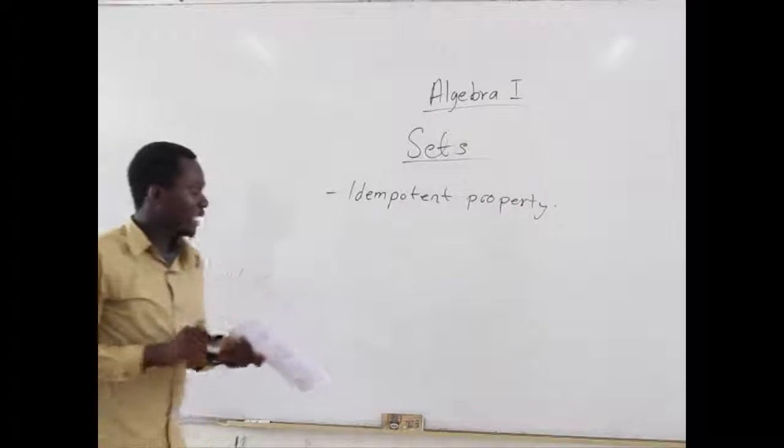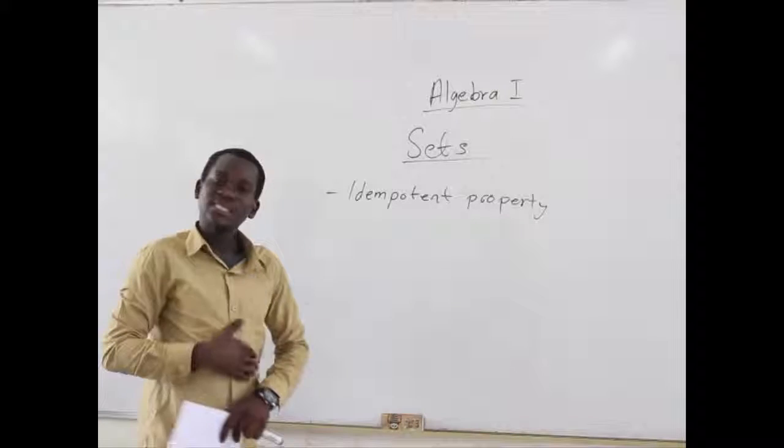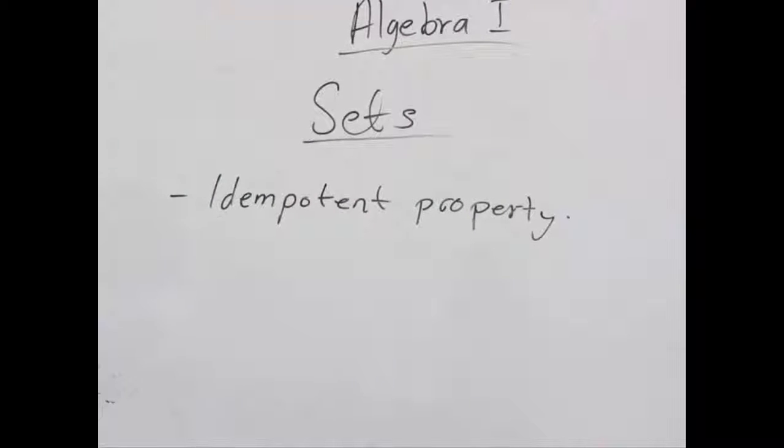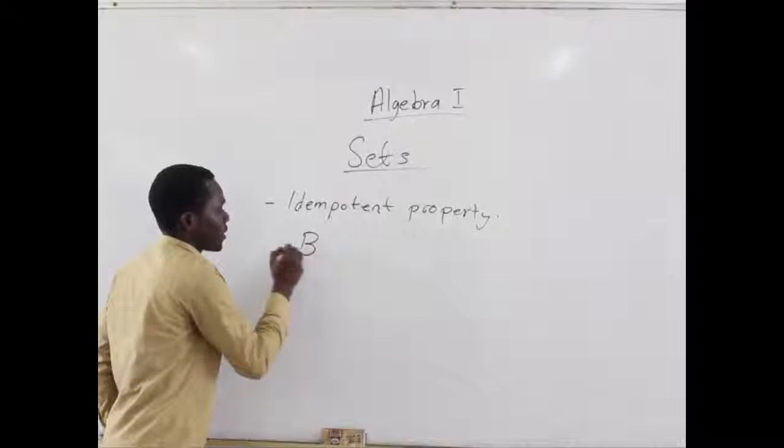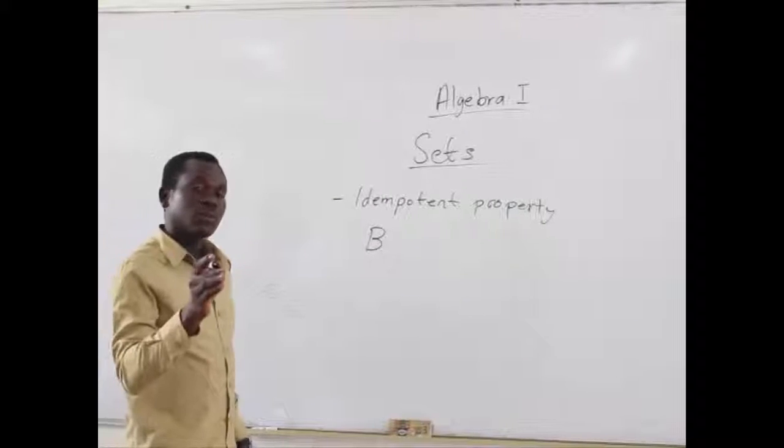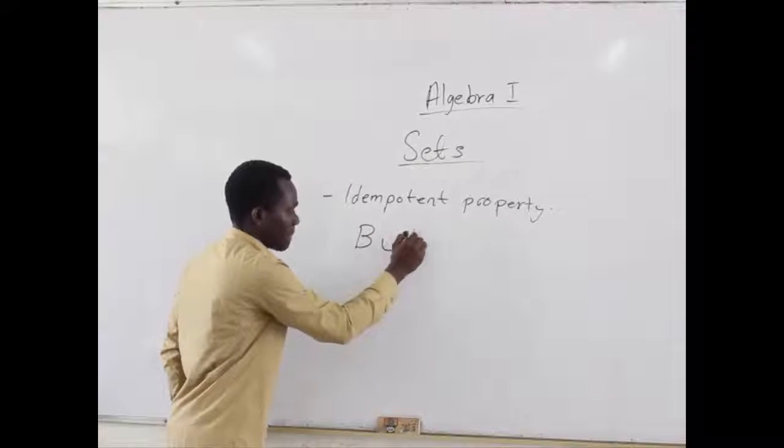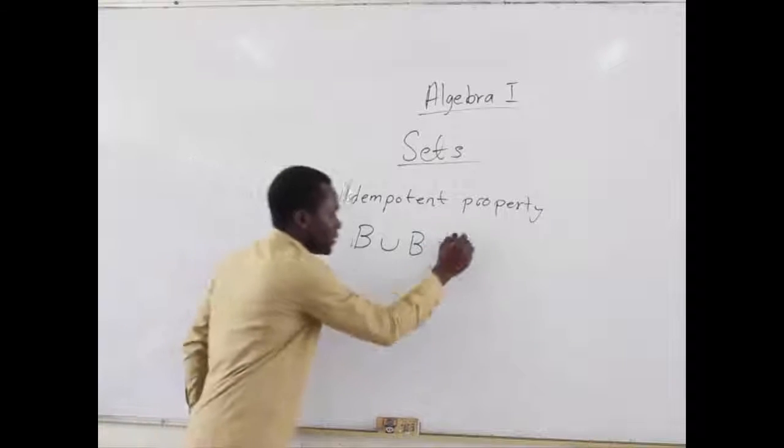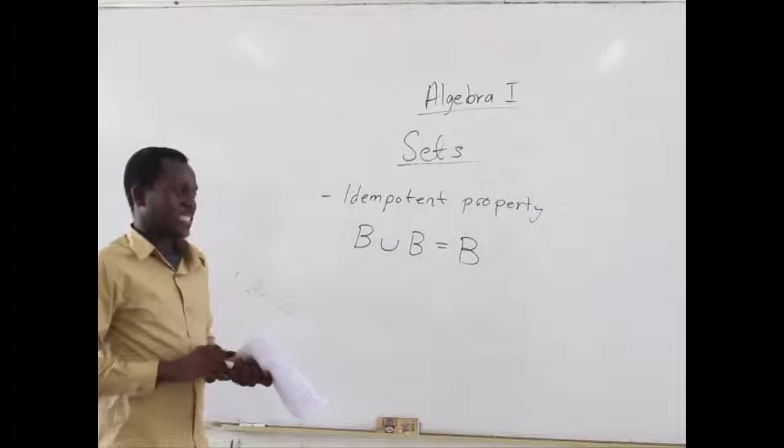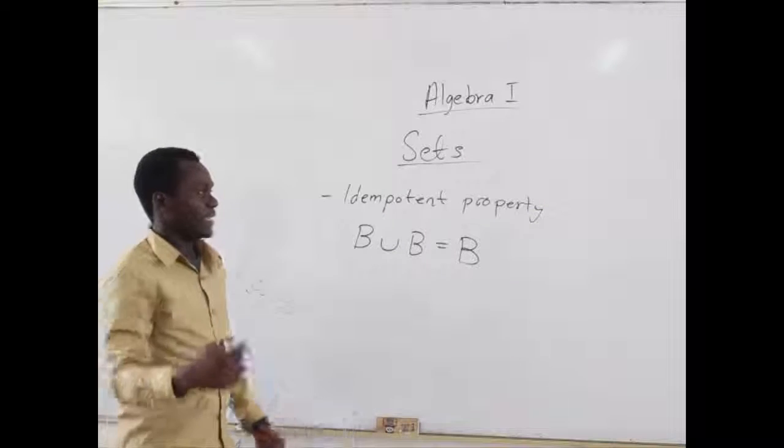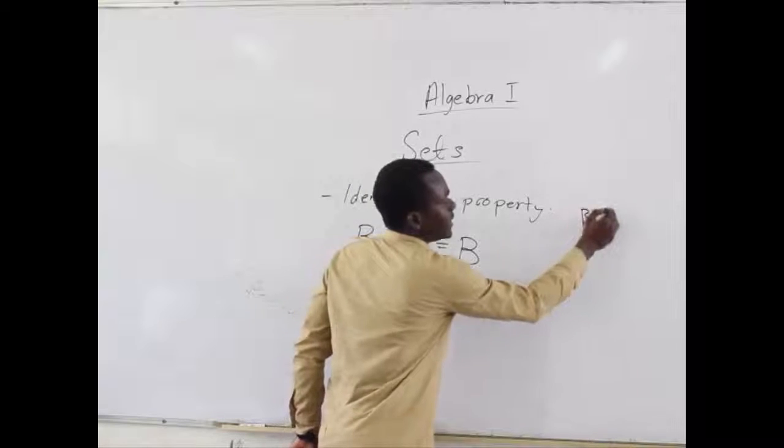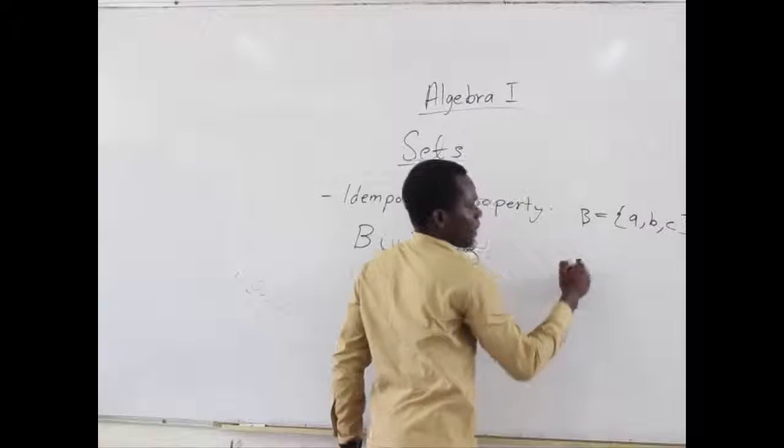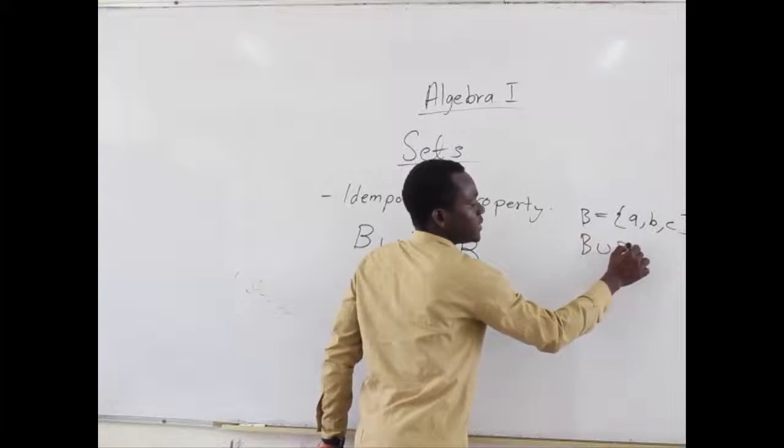What does the idempotent property tell us? It only tells us that when you have a set, let's say a set B. When you find the union of set B with itself, the set that we produce is still the set B itself. It's just like having a set which is B, having these elements A, B, and C.